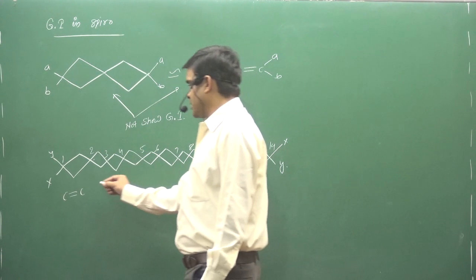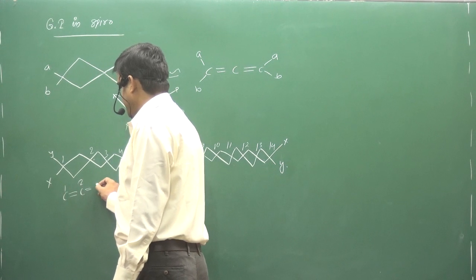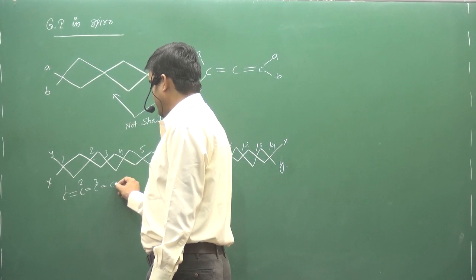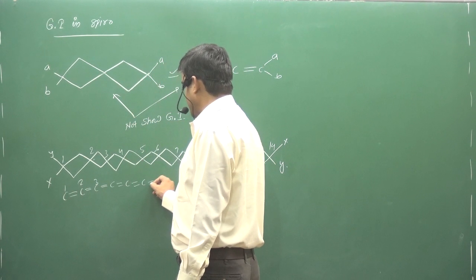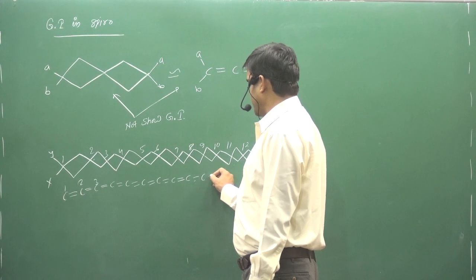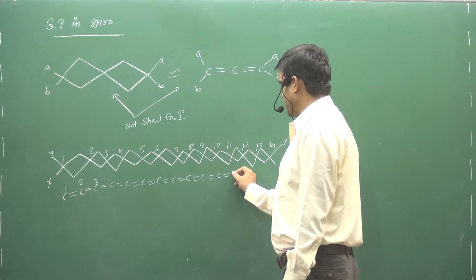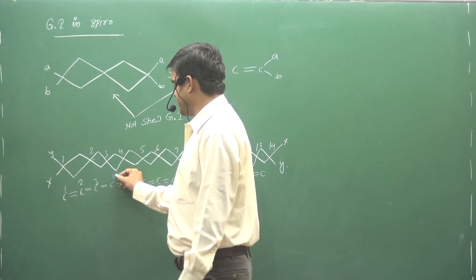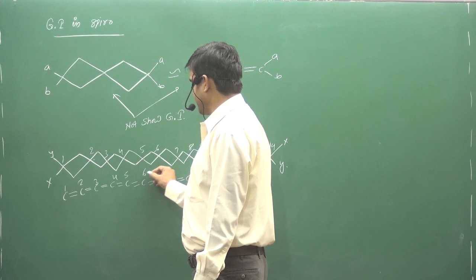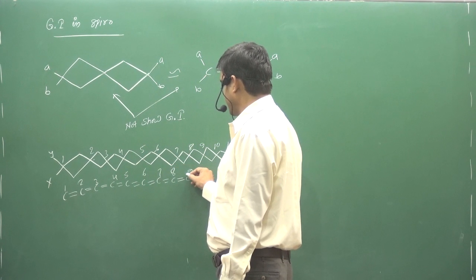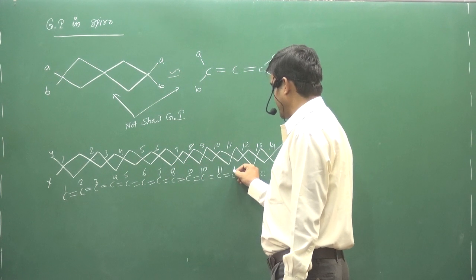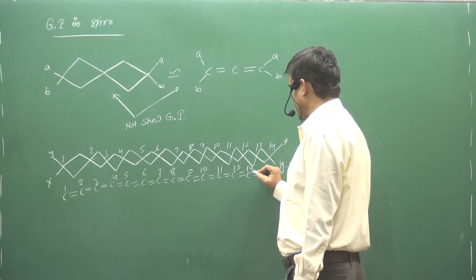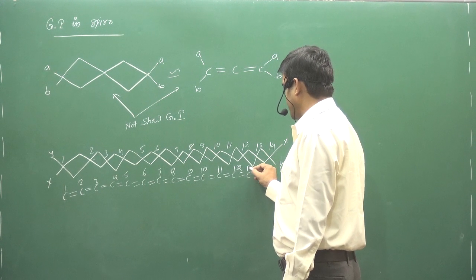Now check. 1, 2, 3, 4, 5, 6, 7, 8, 9, 10, 11, 12, 13, 14. Numbering. So, just give me this. 12, 13, 14.